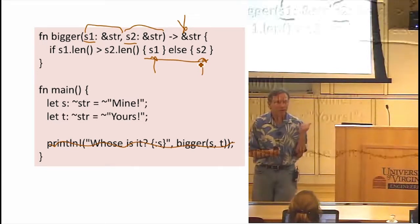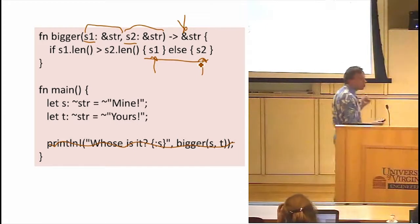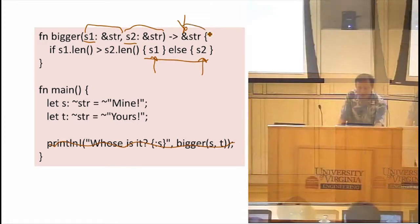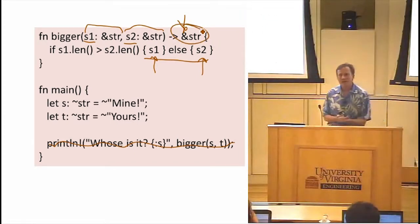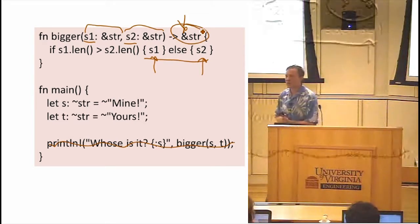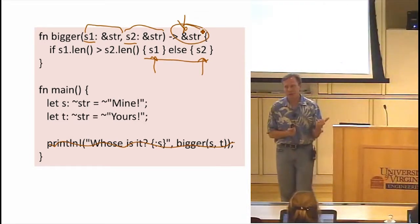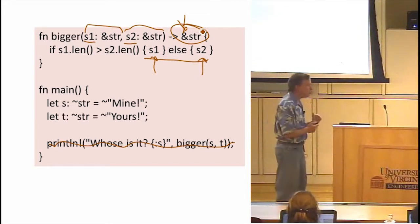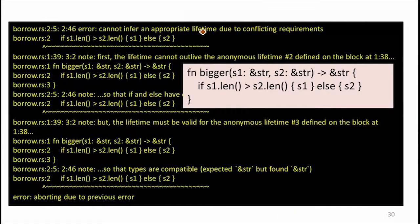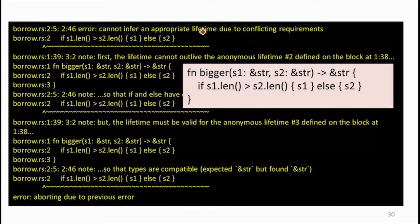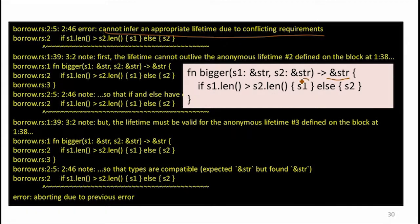We're not making a copy. We're not creating a new object. We're returning one of these same objects. So what's the lifetime of the result? Do we know that when we look at the code for bigger? Do we know what the lifetime of the result is? Yeah. We don't know. There's no way just looking at this code to know what the lifetime of the result is, right? That's up to the caller. How the caller is going to use it tells us what that lifetime is.